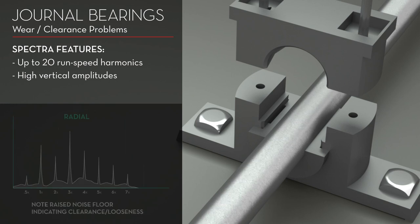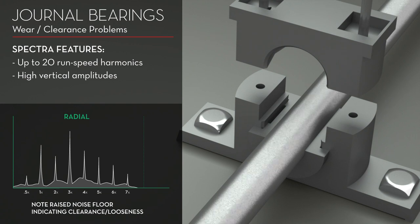Latter stages of bearing wear usually appear on a spectrum as a series of run speed harmonics up to 10 or 20 with a noise floor indicating looseness.